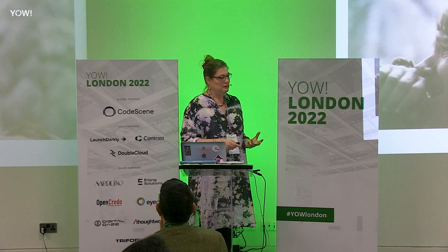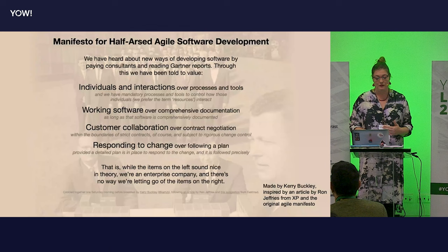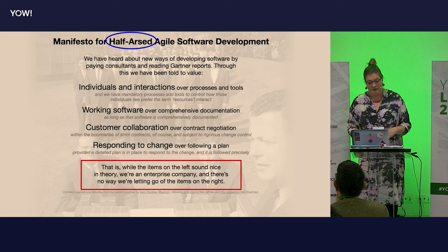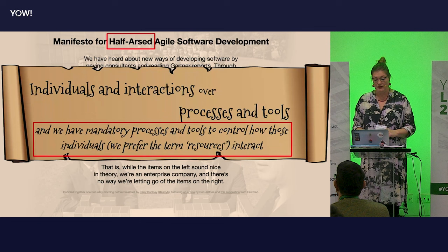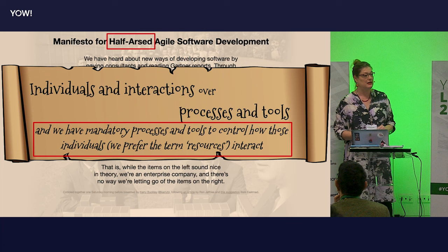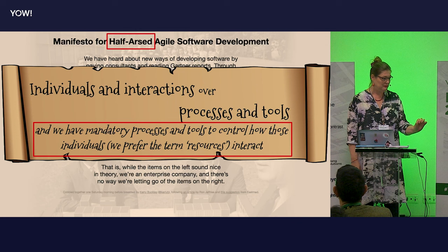But is it really possible to have agile development in the companies we have today? Or is it only some companies that can have it? There were some people who said once that maybe we should have a manifesto for the half-assed agile software development — while the items on the left sound nice in theory, we're an enterprise company and there's no way we're letting go of the items on the right. So maybe with individuals and interactions over processes and tools, we should have mandatory processes and tools to control how those individuals — we prefer the term resources — interact. Because I come out and introduce agile, they really want agile, they've sent people on a Scrum Master course. But they want time registration — for each story, how many hours will it take, how many hours have you spent?